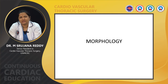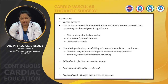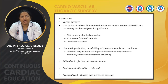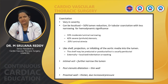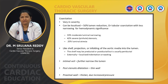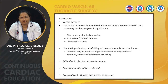Coming to morphology, coarctation can vary in severity. It can be localized with a 50% luminal reduction causing hemodynamic significance, or tubular coarctation with less narrowing can also cause hemodynamic significance. In nearly 33% of cases there is moderate luminal narrowing, 42% have pinhole stenosis, and 25% have luminal atresia. There is usually a shelf-like projection or unfolding of the aortic media into the lumen, which can be pre-ductal, post-ductal, or usually periductal in location.